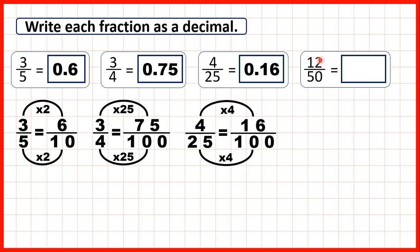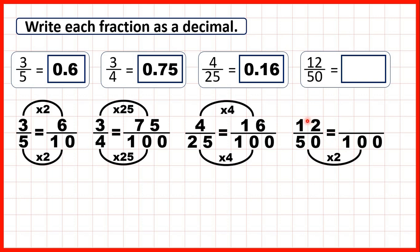Finally, we have twelve fiftieths. One hundred is in the fifty times table, because fifty times two is a hundred. We do the same to the numerator, and twelve times two is twenty-four. So twelve fiftieths is equivalent to twenty-four hundredths, and we can write it as the decimal 0.24.